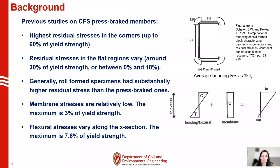Let's go over some previous studies on residual stresses in cold form steel press brake members. There have been several tests on different steels of varying strength and thicknesses over the years and the measured residual stresses vary from study to study. We have seen the highest residual stresses in the corners, in some cases up to 60% of the yield strength. Residual stresses in the flat regions vary — around 30% of yield strength or between 0 and 10%. Generally, rolled form specimens have substantially higher residual stresses than press brake specimens.